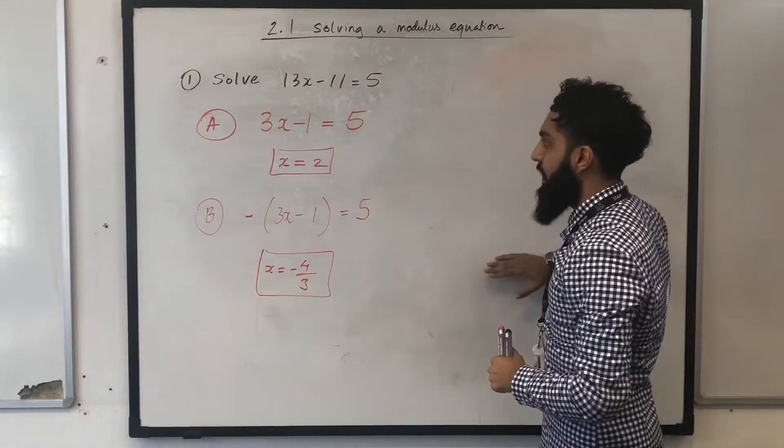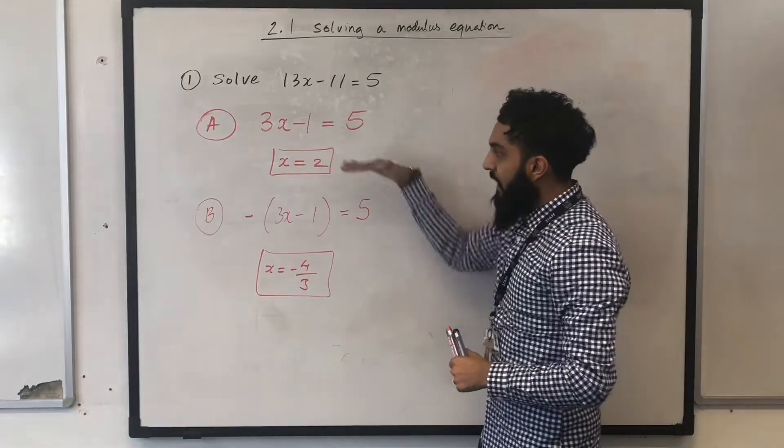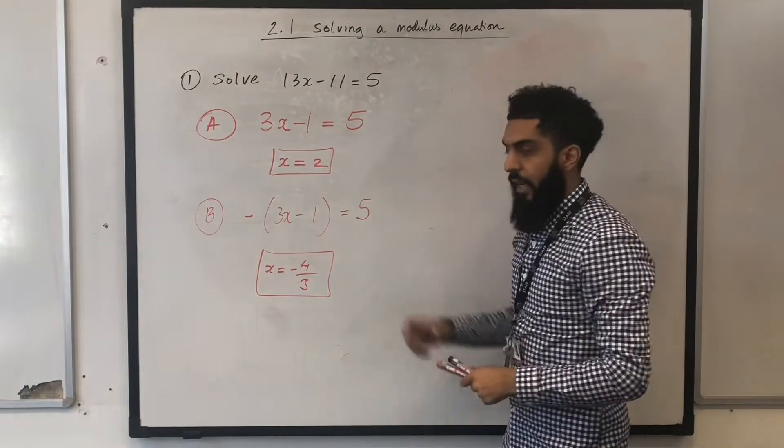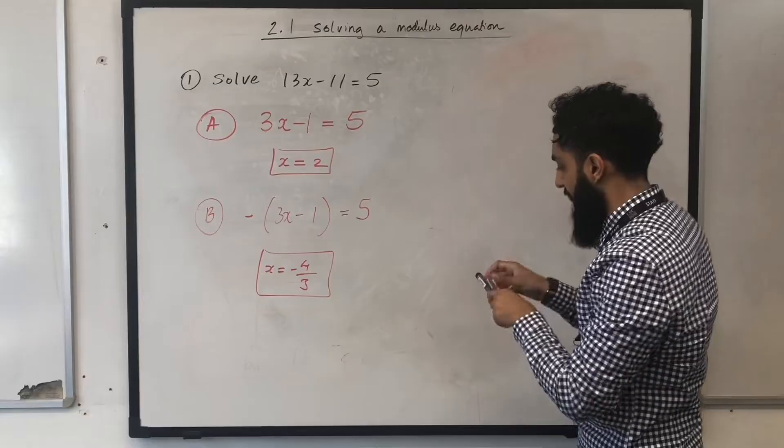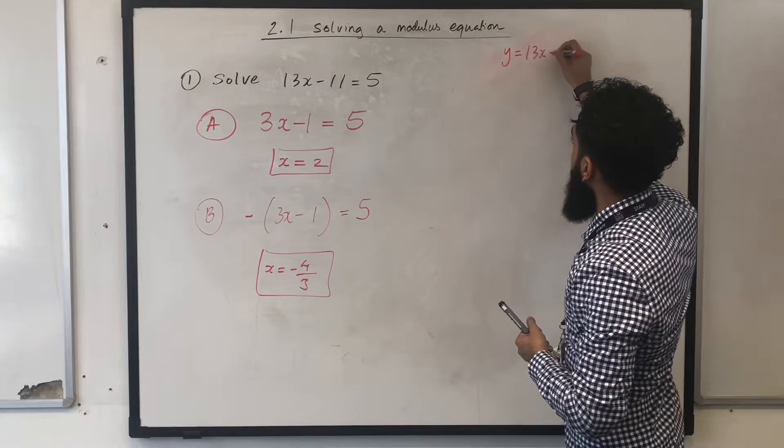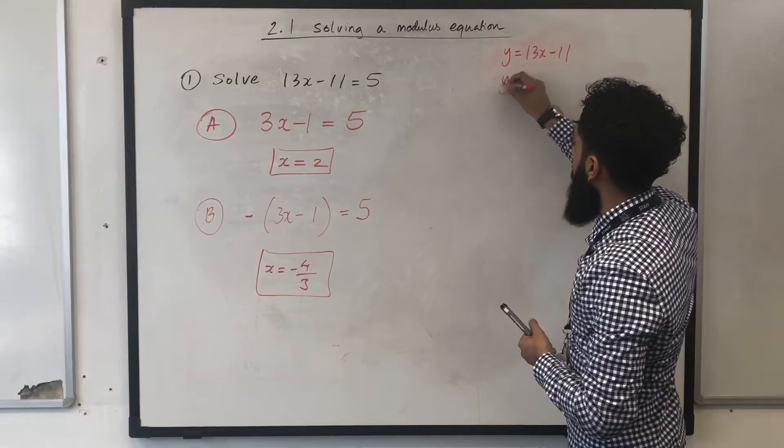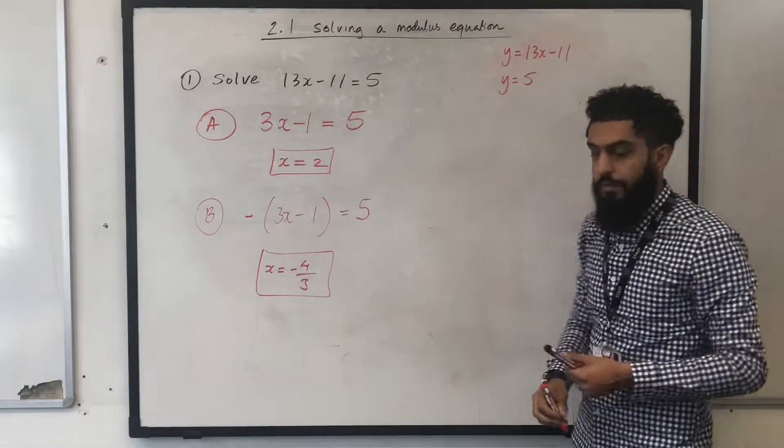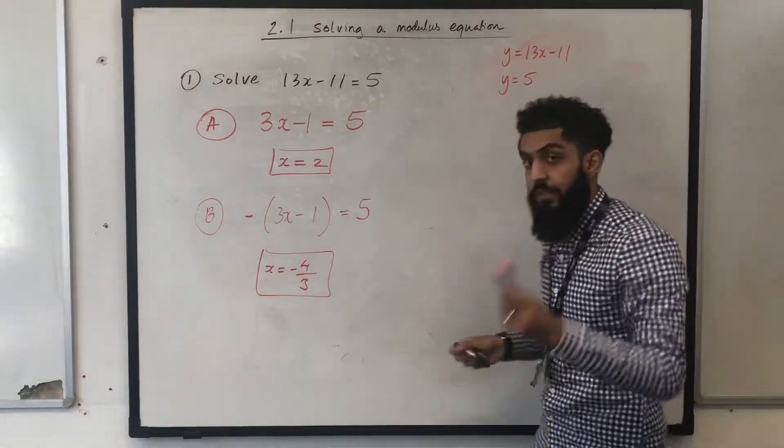I'm going to sketch this, and see if these solutions are reasonable, if they're correct. Here's my axes. The first graph has the equation y equal to the modulus of 3x-1, the second graph has the equation y equal to 5. So, I'm going to quickly sketch this for you guys.